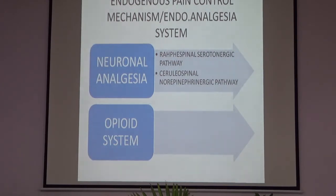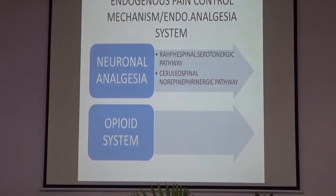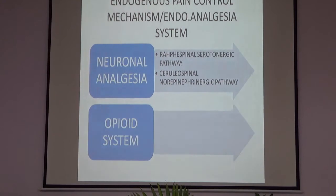Then comes the endogenous pain control mechanism, also called the endogenous analgesic system. There are two systems: the first is neuronal analgesia — also called the descending pain modulating system or descending analgesic system — and the second is the opioid system.